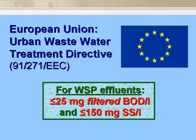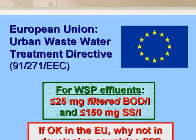In the European Union, the quality of treated wastewaters is governed by the Urban Wastewater Treatment Directive, which lays down a general BOD requirement of no more than 25 mg per litre — but for pond effluents this is filtered BOD. Compliance with the Directive's requirement for suspended solids is optional, except for ponds: pond effluents must have no more than 150 mg suspended solids per litre. This raises the question of whether this approach is acceptable in developing countries, and it is always something that should be discussed with the local environmental regulator.